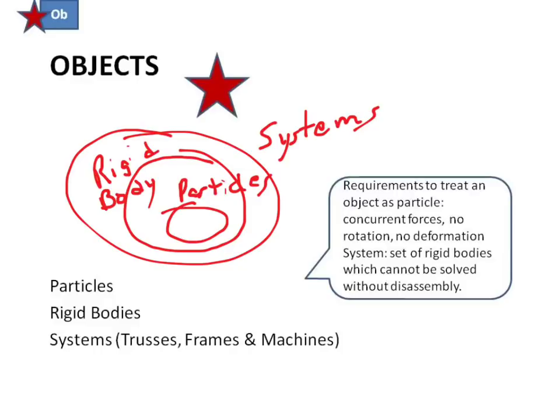The requirements to treat an object as a particle is that you have some spot where you can consider the only loads acting on that spot as concurrent. There are only forces. Nothing about that point is going to rotate because it's just a point.